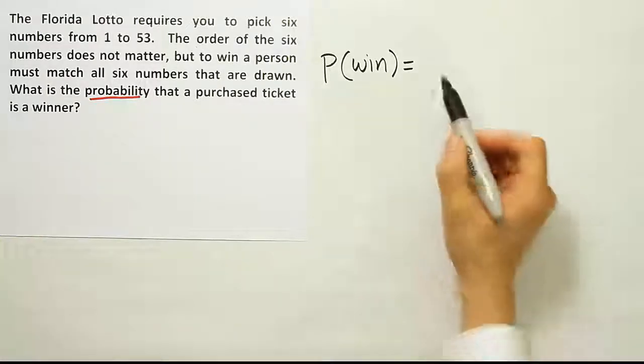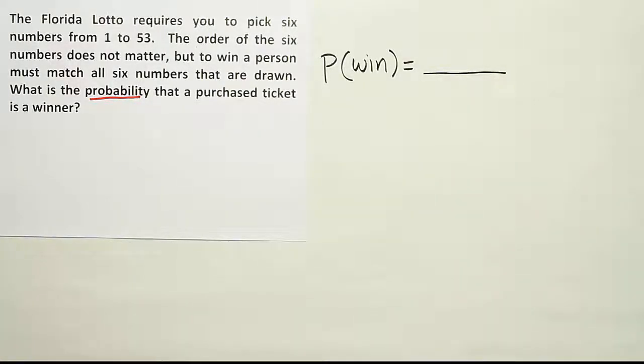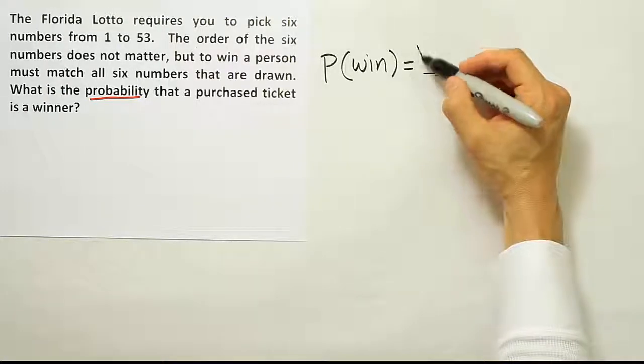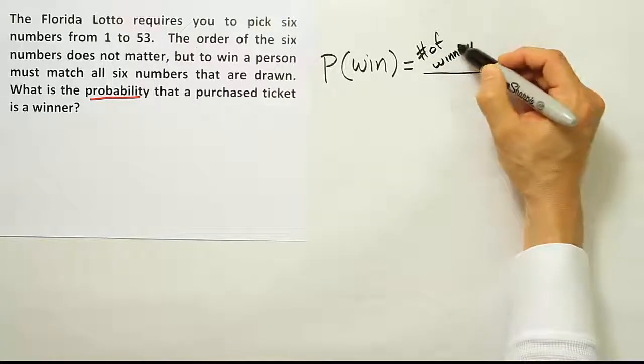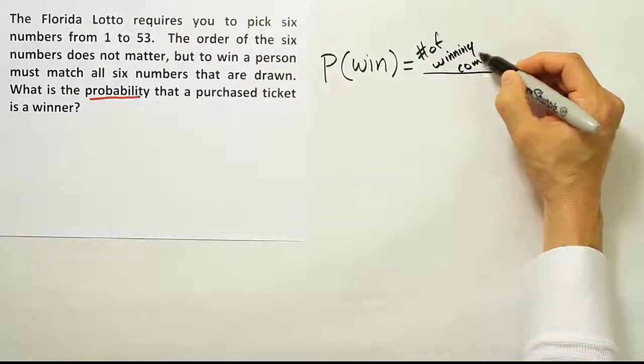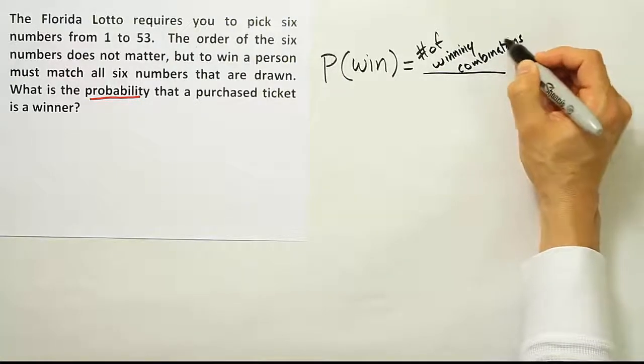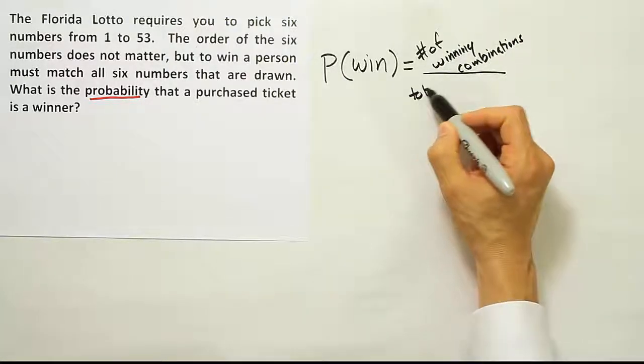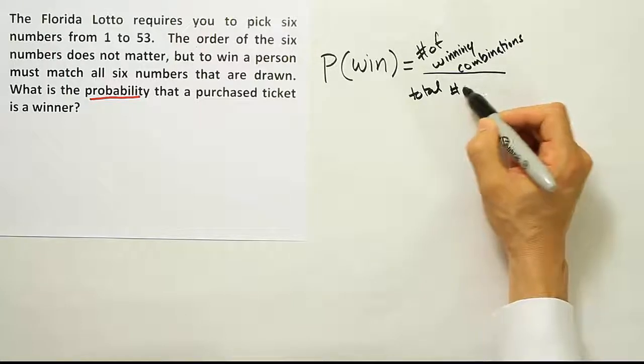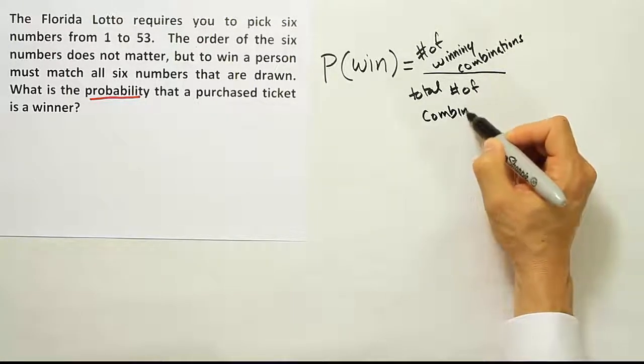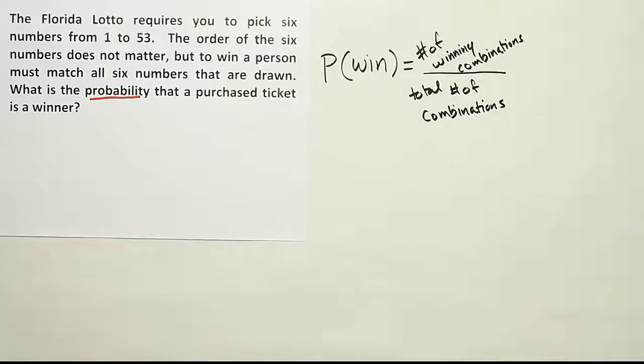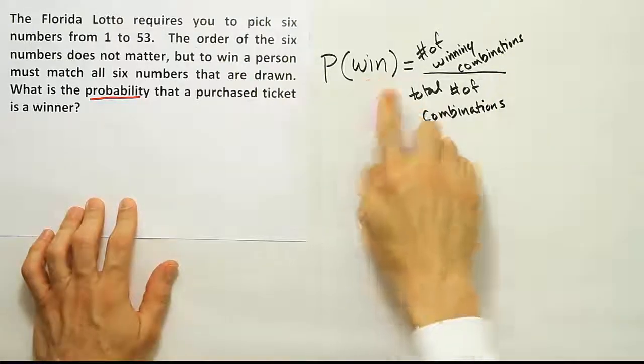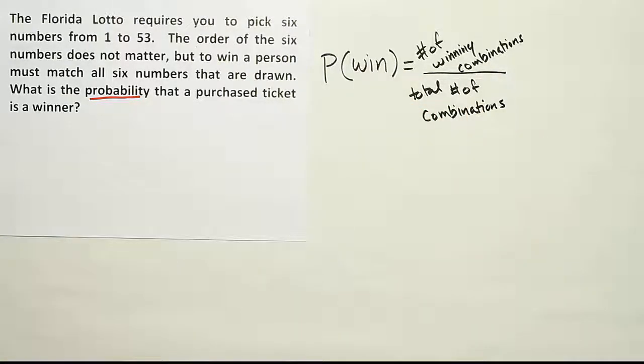So it's just one ticket, one event. So we'll draw a fraction bar. We have to fill in the probability by doing basic probability. Remember that's always number of winning combinations over the total number of combinations. So this is the basic probability layout - number of ways I win divided by the total number of possible outcomes.